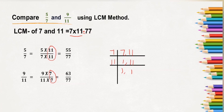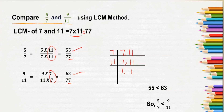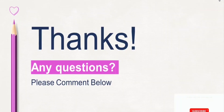Now, as the denominators are the same — both 77 — we will only compare the numerators: 55 and 63. Here, 55 is lesser than 63. So 5/7 is lesser than 9/11. Students, I hope you have understood how to compare unlike fractions. Thanks for watching. Keep supporting!